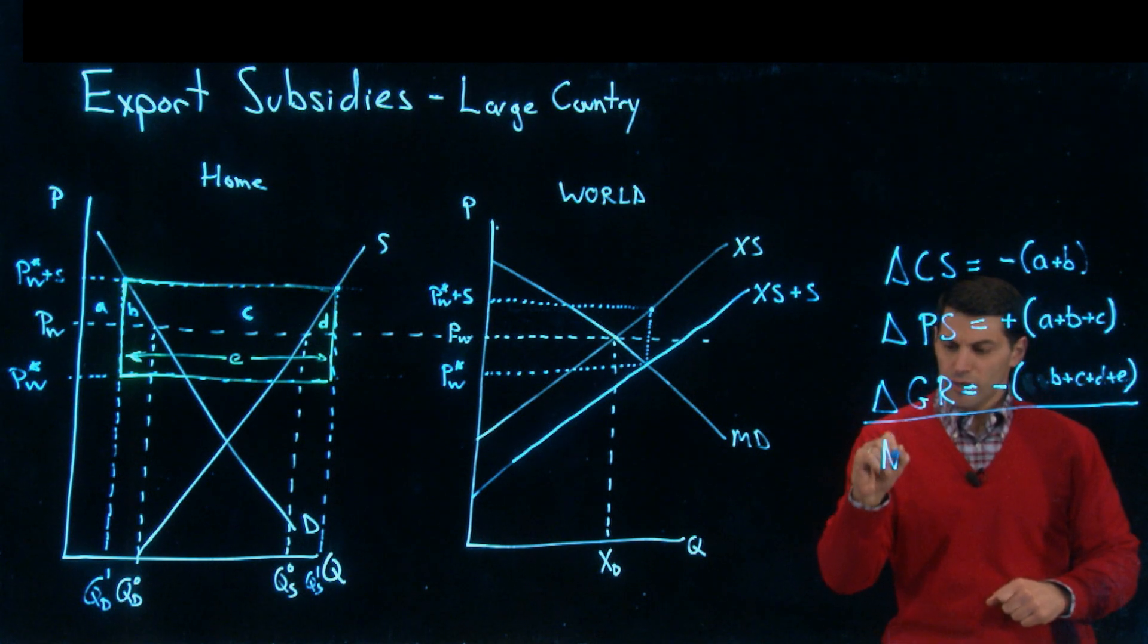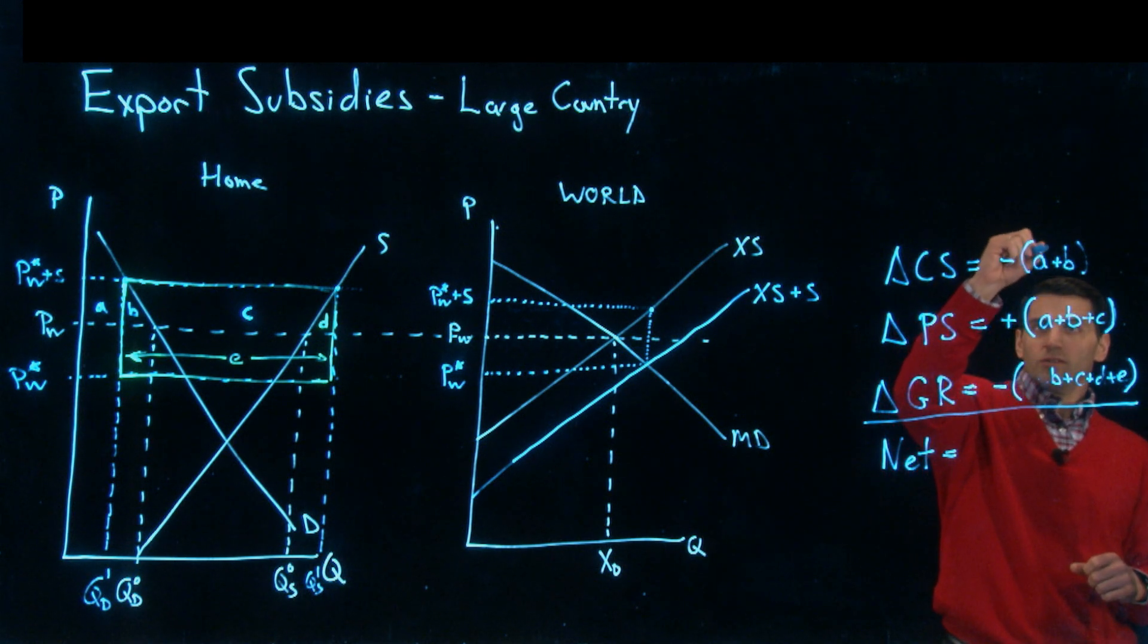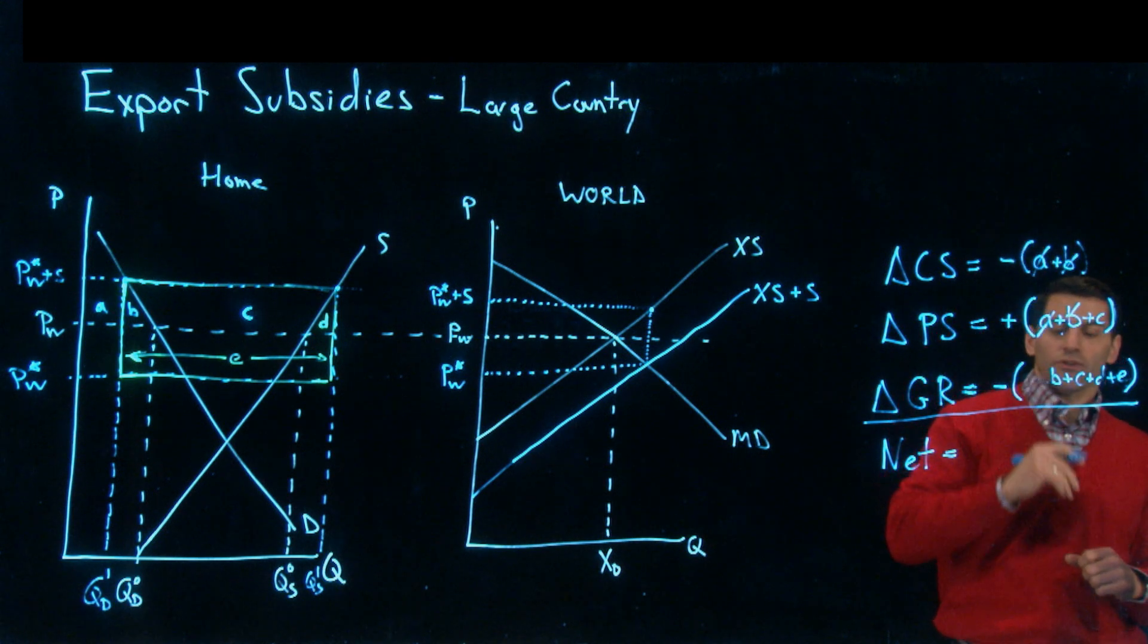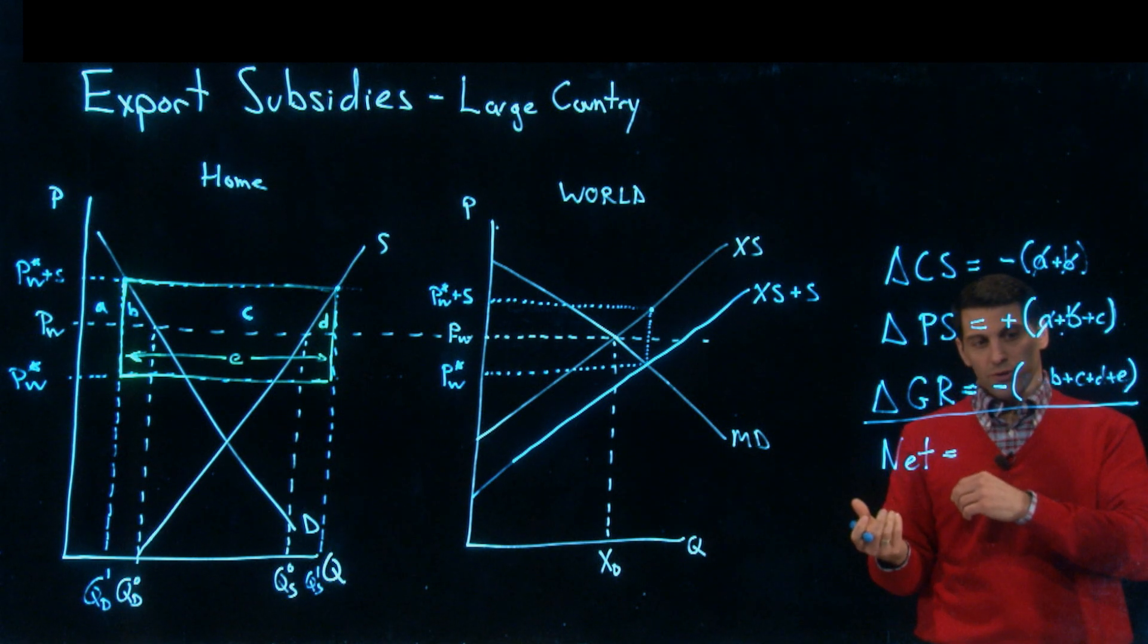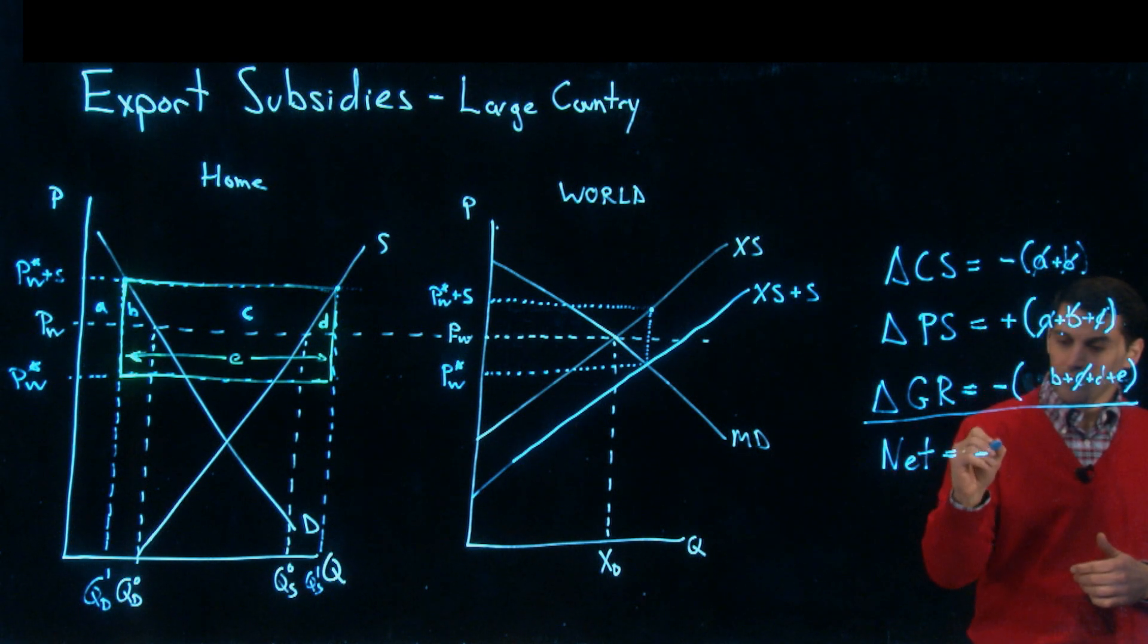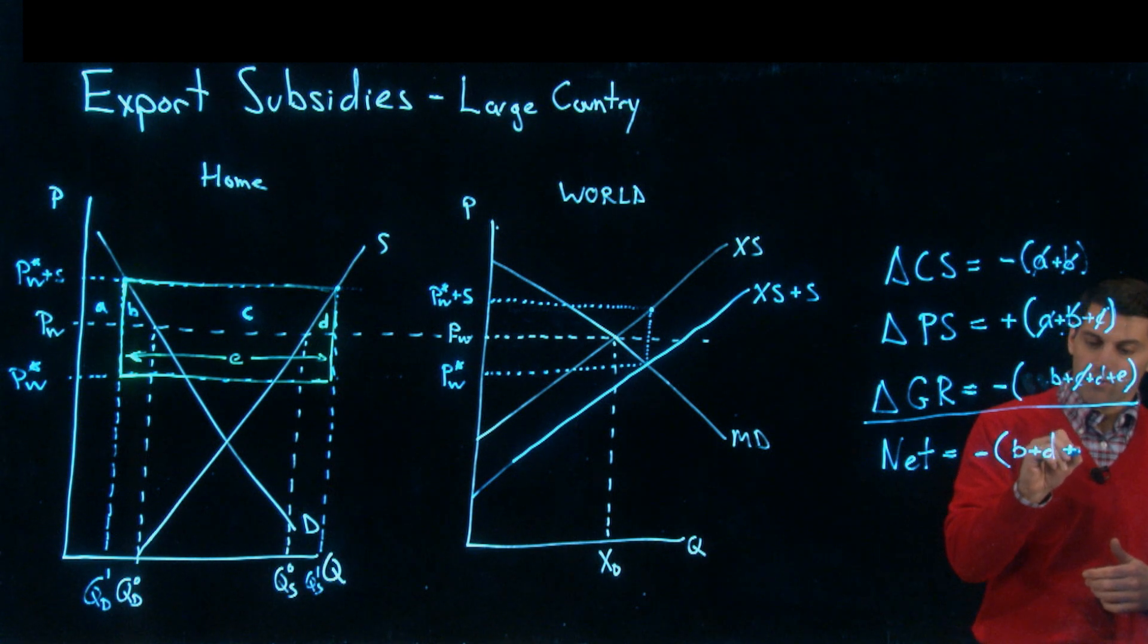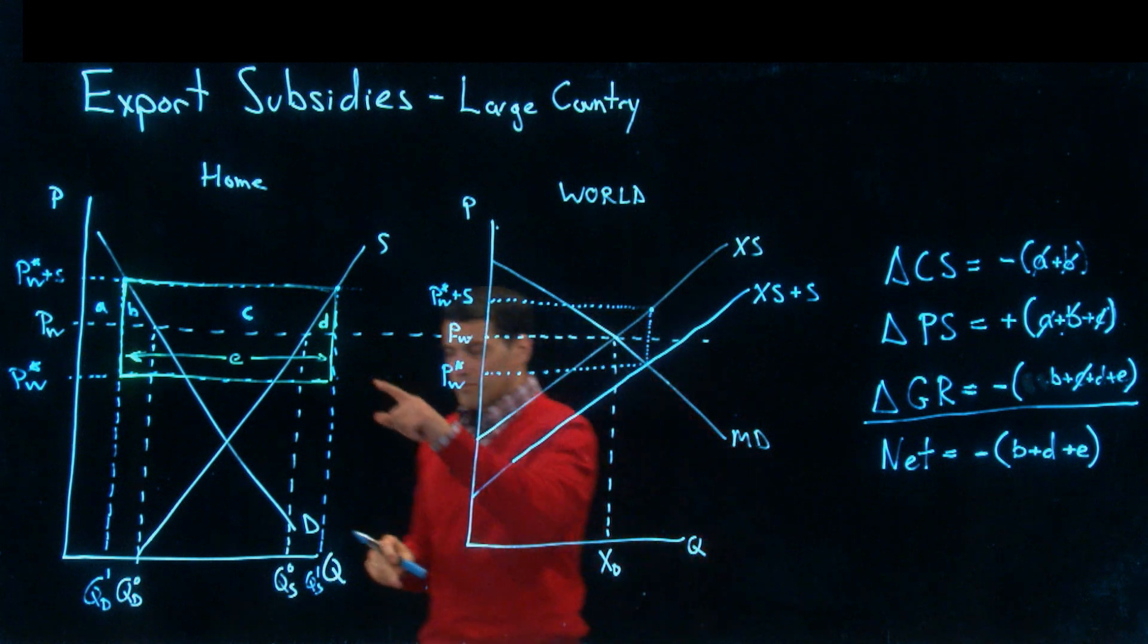What is the net effect? Once again, this A and B that the consumers lose is really just a transfer to the producers. C is a gain for the producers in surplus, but that's coming at the expense of the taxpayers. Once again, we're left with our consumption and production distortions, but now we're also adding in this extra loss of E.